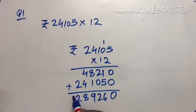Now we add: 0, 0, 0, 0, 1 plus 5 is 6, 2 plus 0 is 2, 8 plus 1 is 9, 4 plus 4 is 8, and 2. So the answer is 2,89,260 rupees. Understood? One more sum.